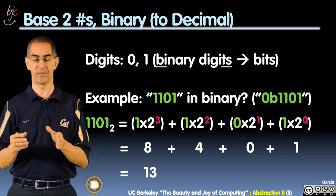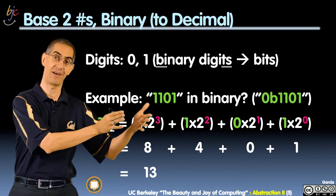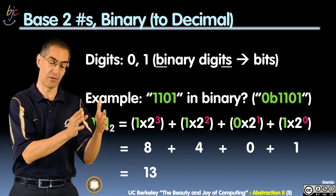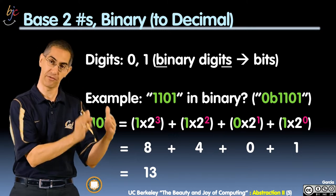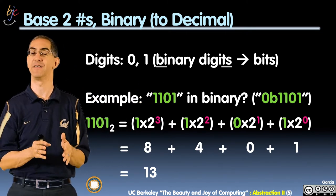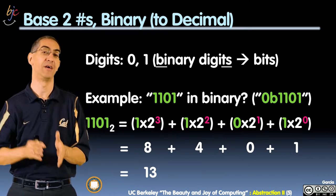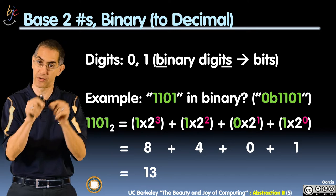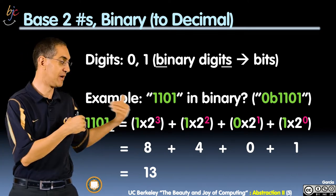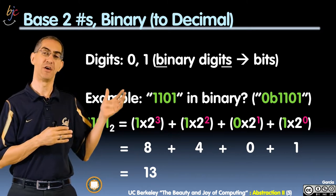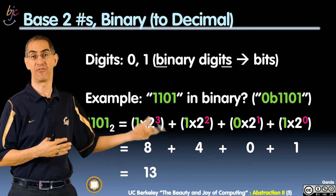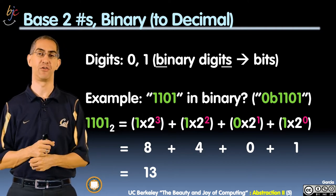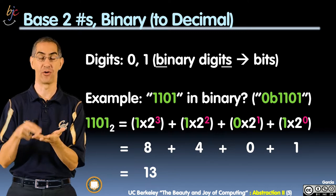So 1101 — what does that mean? Each of the columns, rather than being ones, tens, hundreds, and thousands, use base two to the power. Base two to the zero is one — that's the ones column on the far right. Then two to the one is the twos column, two to the two is the fours column, and two to the three is the eights column. So you have coefficients 1, 1, 0, 1 times each of those values: one times eight is eight, one times four is four, zero times two is no two, and one times one is one. Adding eight and four is twelve, plus one is thirteen.